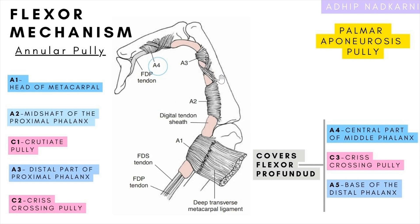Between A2 and A3 there is a cruciate pulley — also called the crisscross pulley — that's C1. Then there is C2 between A3 and A4. A4 lies at the central part of the middle phalanx. A5 is at the base of the distal phalanx, and between A4 and A5 there is C3, another cruciate pulley.